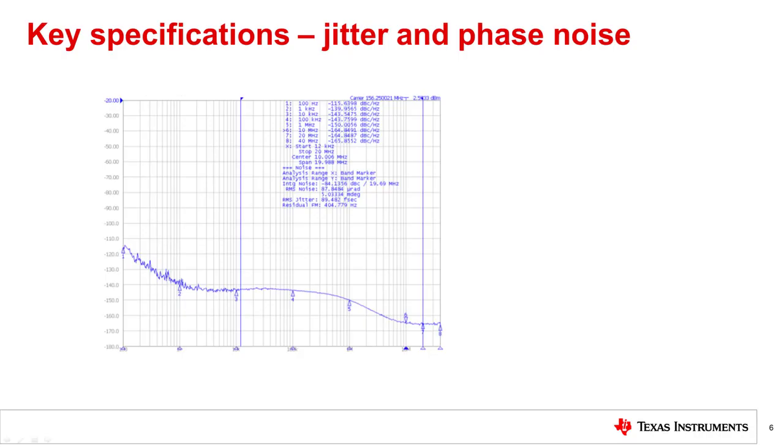As the phase noise of the reference oscillator can propagate further down in the system, even if a jitter cleaner is used, it's important to provide good phase noise reference for the PLL in the system, especially within the PLL loop bandwidth. This means the lower offsets of 100 Hz, 1K, and 10 kHz are most important.